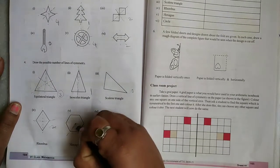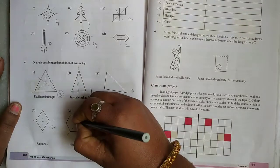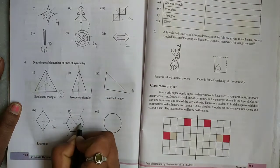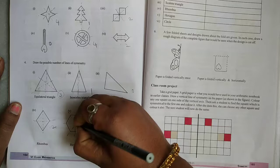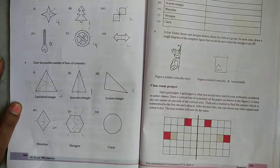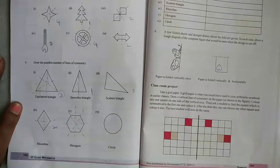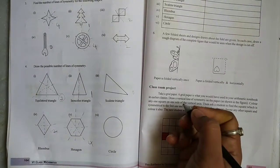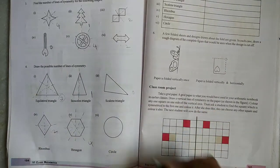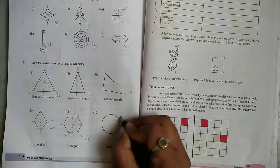Hexagon: 1, 2, 3, 4. Four lines of symmetry. Next, circle. It is uncountable.